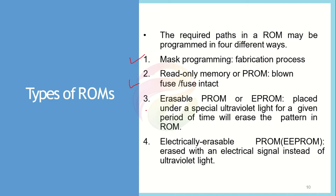For both mask ROM and PROM, whatever is written cannot be changed. The third type is the Erasable PROM, or EPROM. In the EPROM there is an extra functionality: if you place the IC under ultraviolet light for a certain time period, it erases all the contents of the ROM. Once all contents are erased, we can reprogram it again. So if you want to erase the ROM and write new data, you apply ultraviolet light, which resets all connections to their original state, and then you can reprogram it.